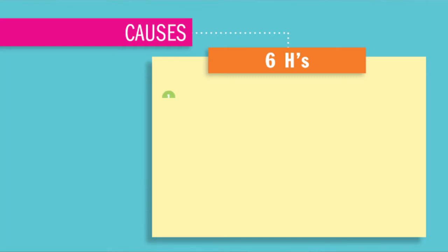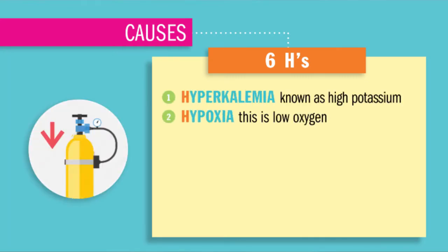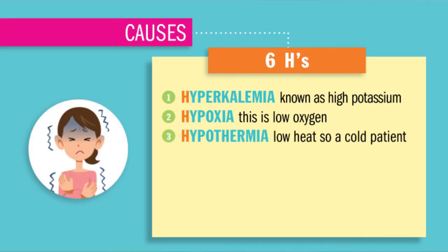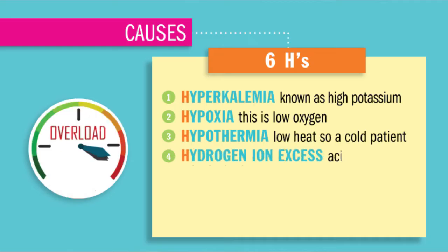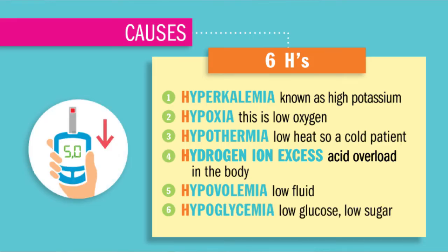The six H's: hyperkalemia, known as high potassium; hypoxia, low oxygen; hypothermia, basically a cold patient; hydrogen ion excess — basically a major acidosis overload in the body, called acidosis, metabolic or respiratory. Also hypovolemia, low fluid; and hypoglycemia, low sugar or low glucose.